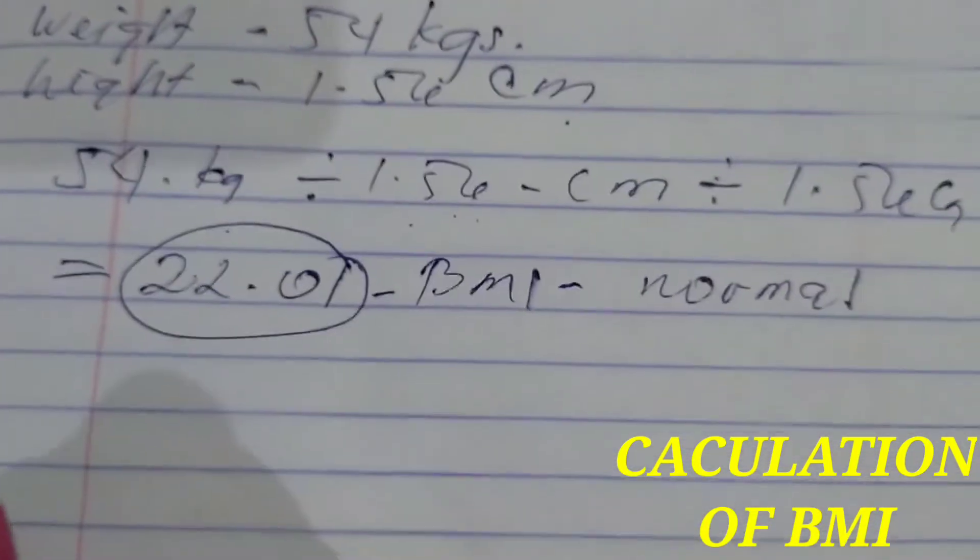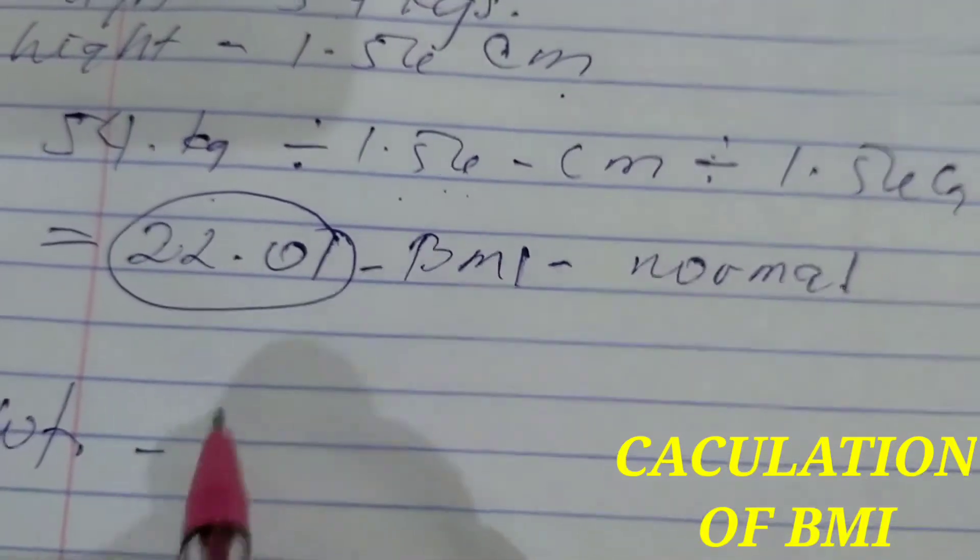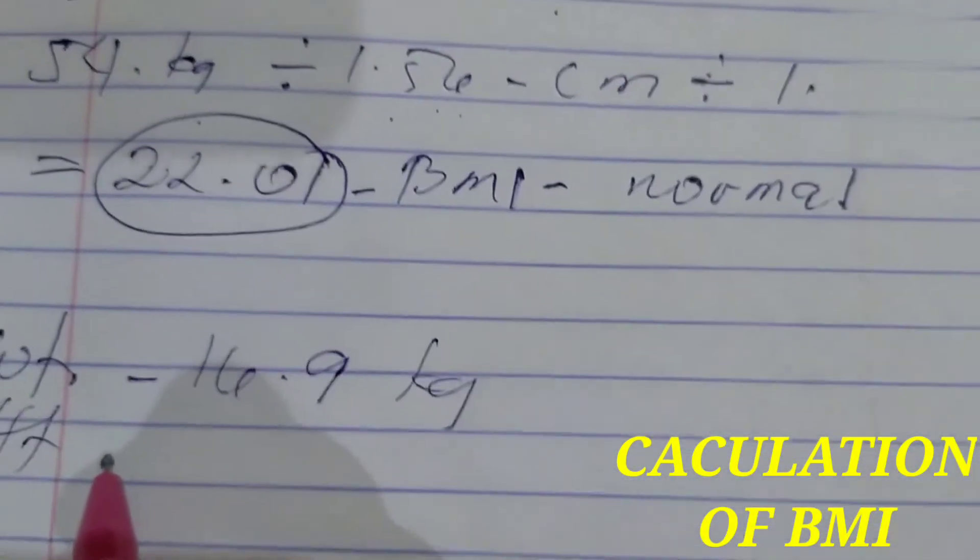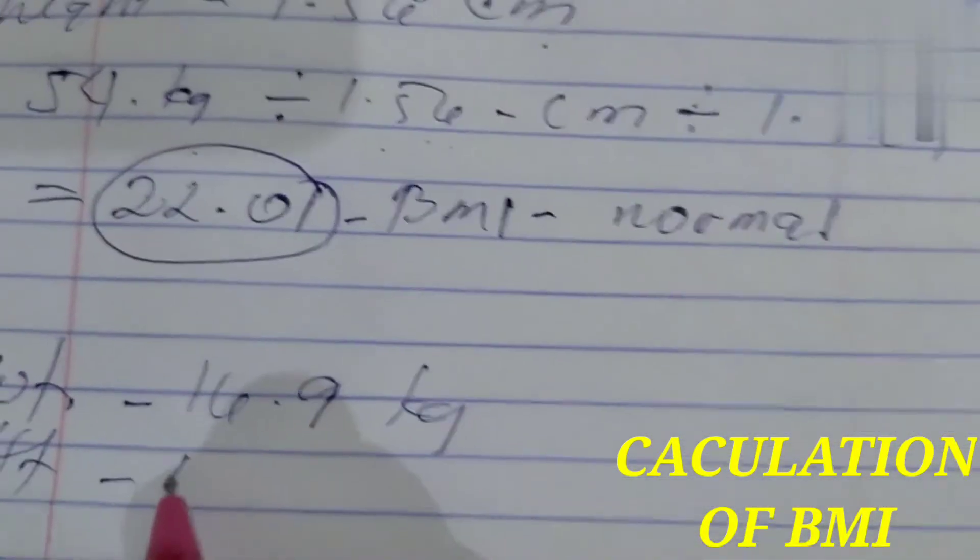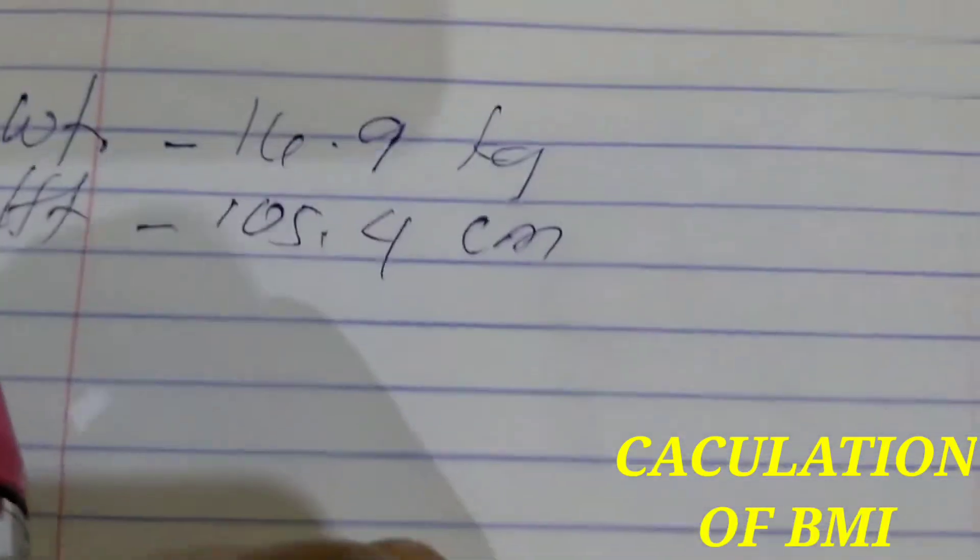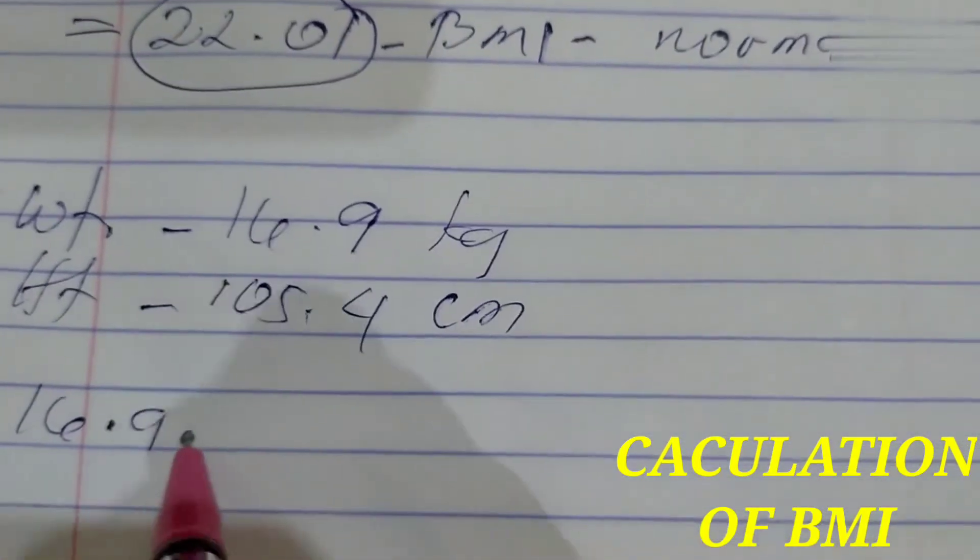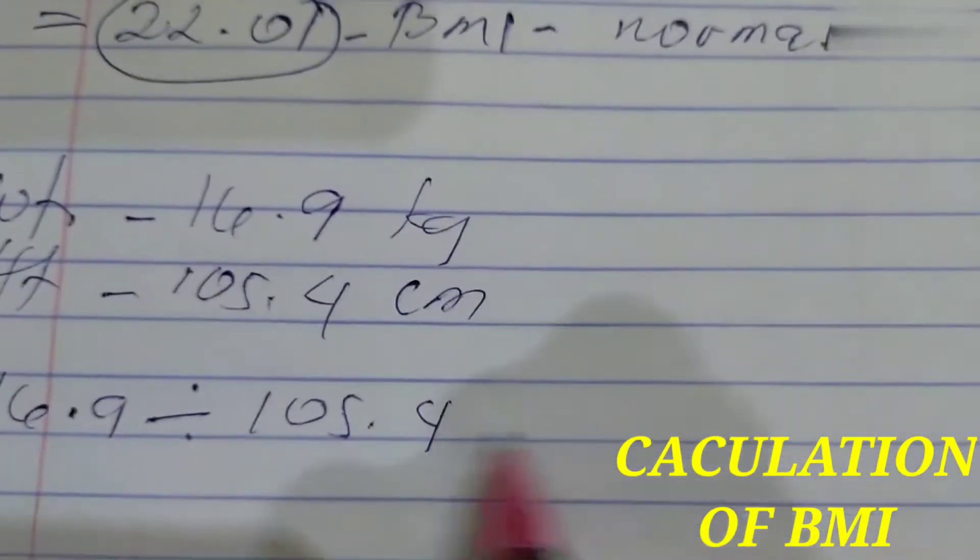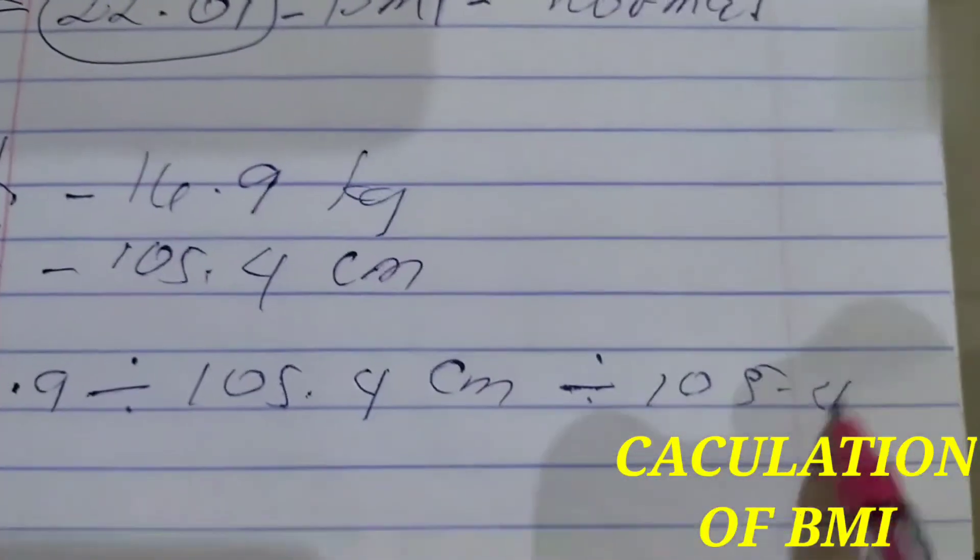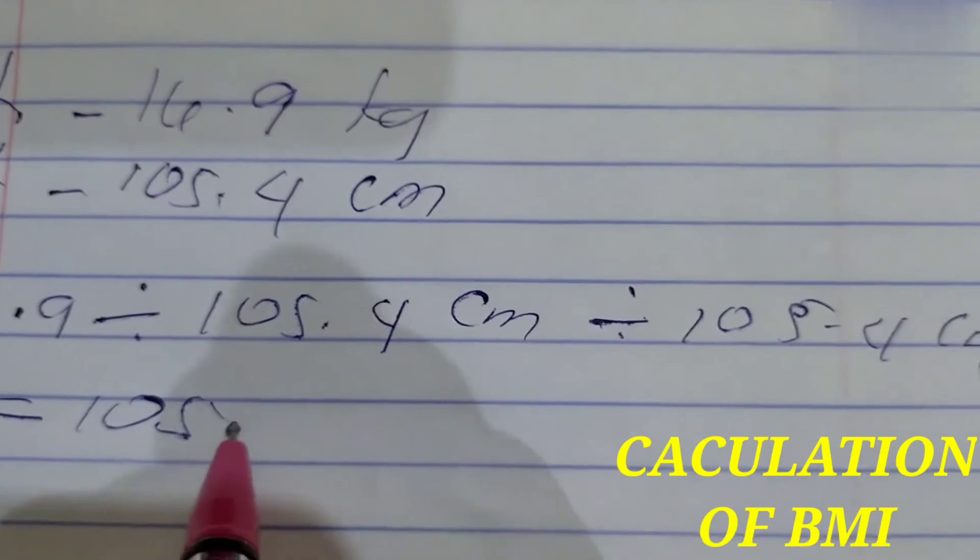Let's do another one. The weight is, for example a child, the weight is 16 kg and the height is 105.4 centimeter. So now what we do again is to divide them three times: 16.9 divided by 105.4 centimeter, divided by 105.4 centimeter, is equal to 15.2, and that's the BMI.